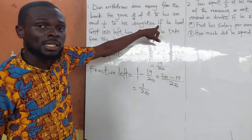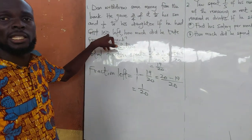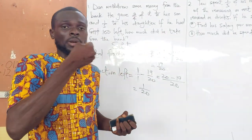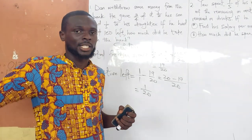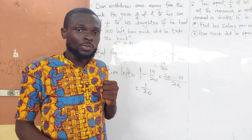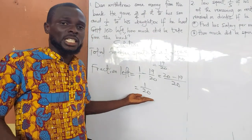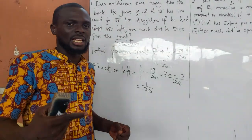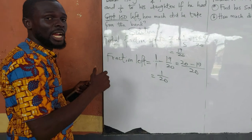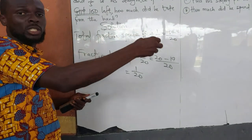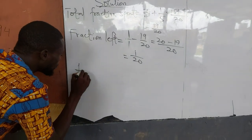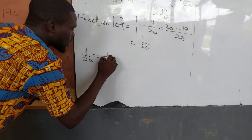Now when we read the question, it said: if he had 100 cedis left, how much did he take from the bank? In terms of fraction, the amount he took from the bank is 1, because 1 is the total fraction. And in terms of Ghana cedis, the amount left has been stated in the question — he is having 100 cedis left. So I will equate the fraction left, which is 1 over 20, to the amount left, which is 100 cedis.